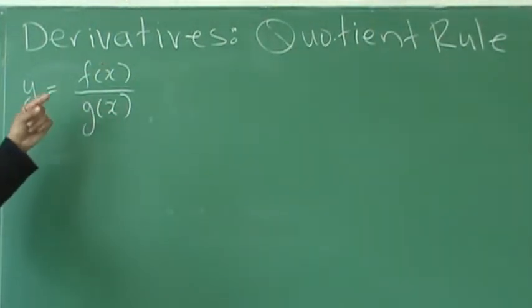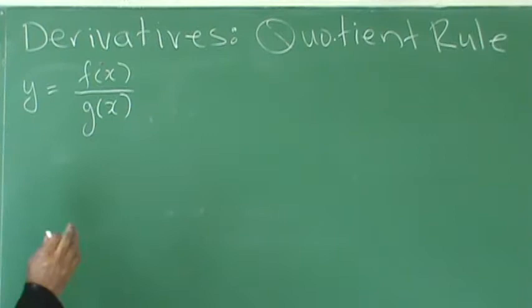For example, y equals f over g of x. Now, how are we going to apply the quotient rule? And this is how it works.